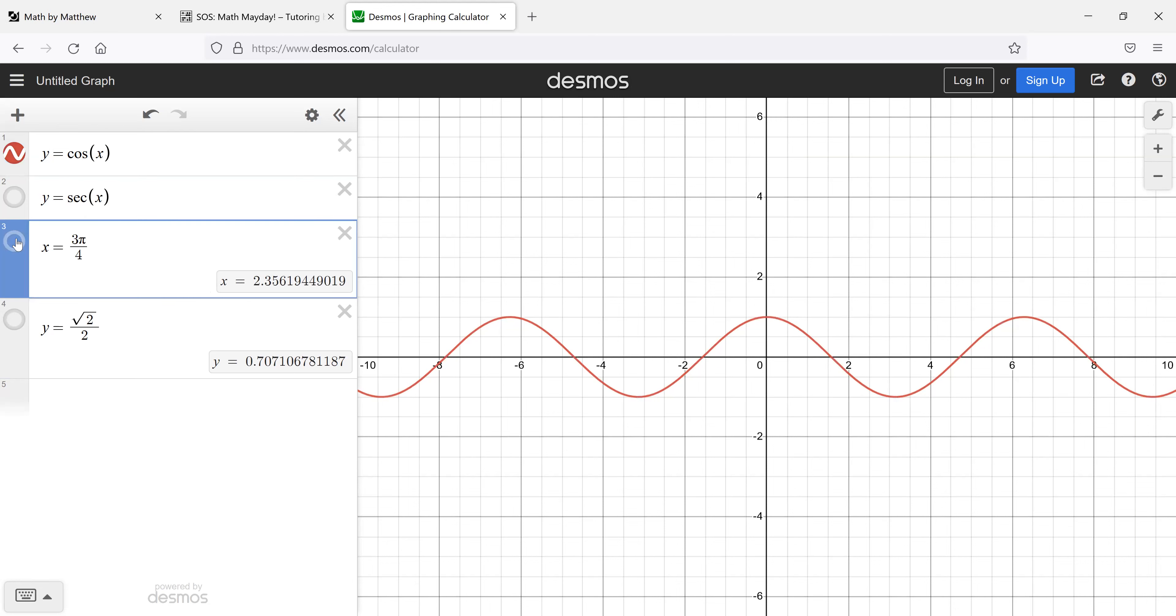And so at three π over four, we're going to have to use this other thing again. Do you see how it's negative 0.707? Yeah. So that's actually negative square root of two over two. And then if you get down to π, the y value is negative one.